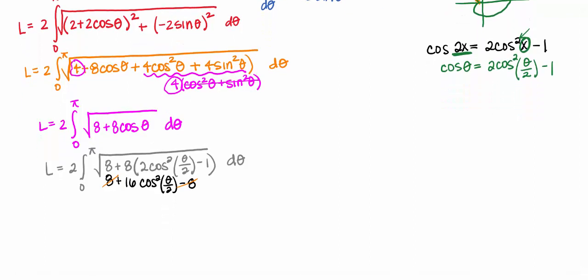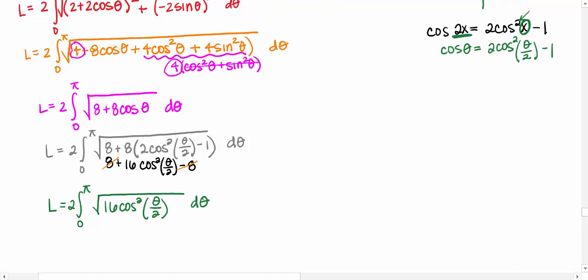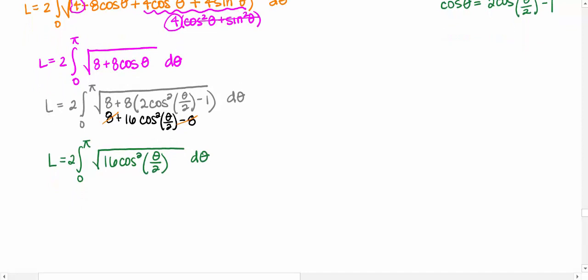And so I have, I haven't even integrated yet, I'm integrating from 0 to pi, square root of 16 cosine squared theta over 2, with respect to theta. And that is great, because now I have a perfect square underneath my square root, single term, I'm ready, I can just take the square root of that.